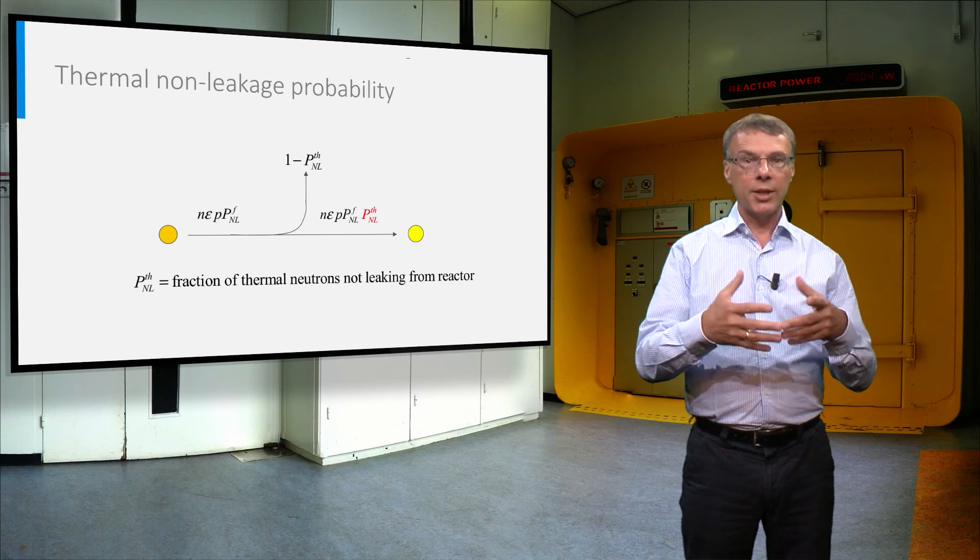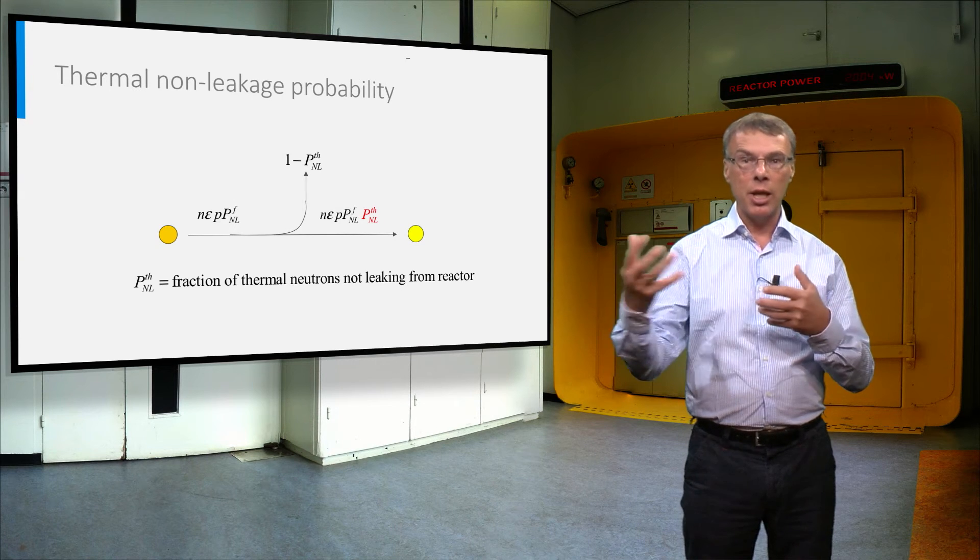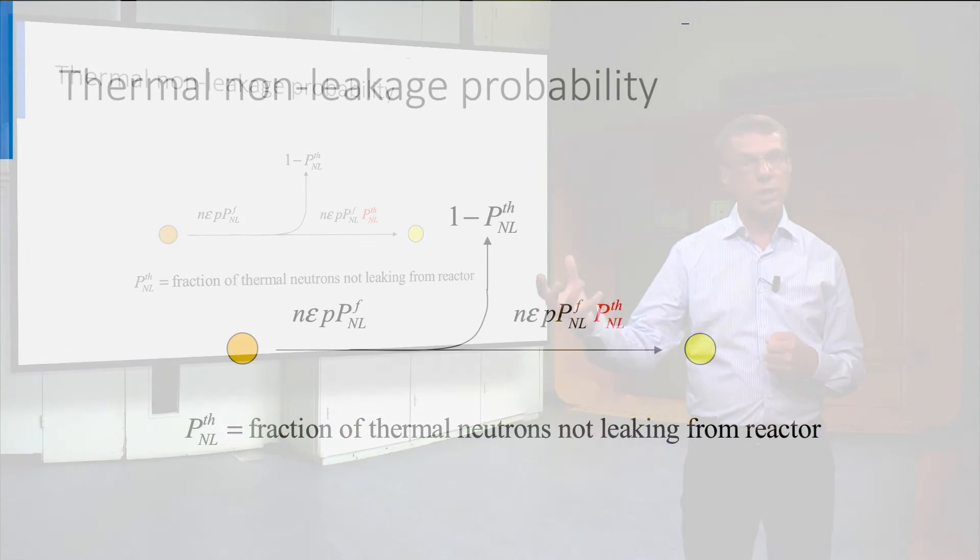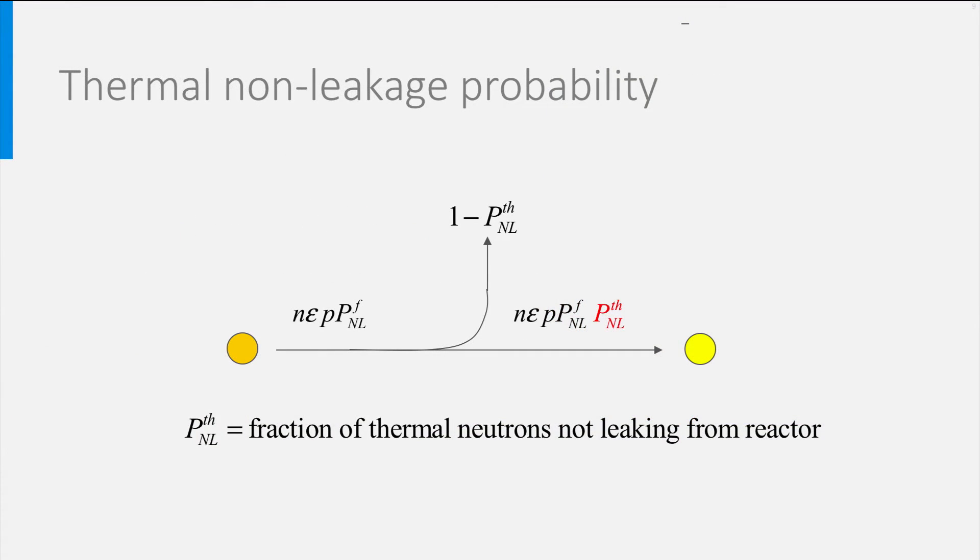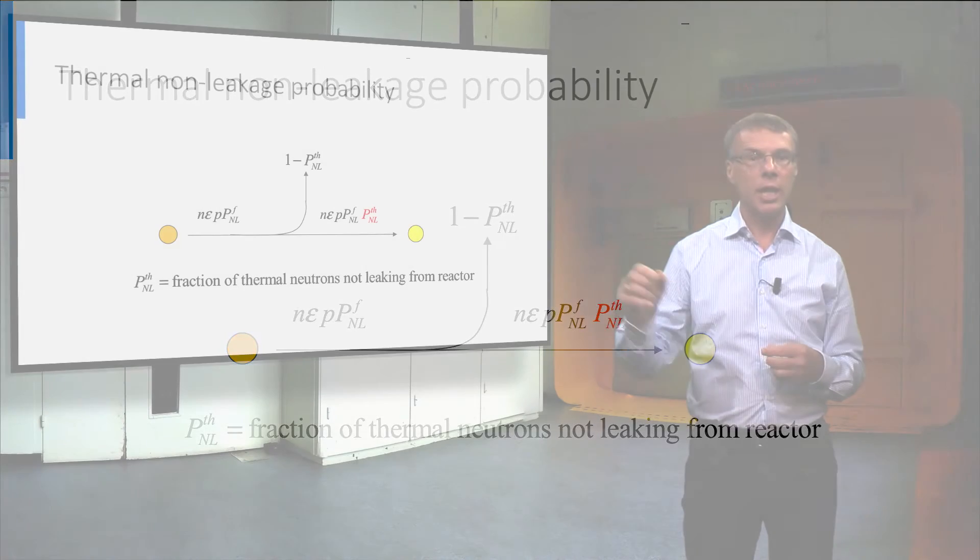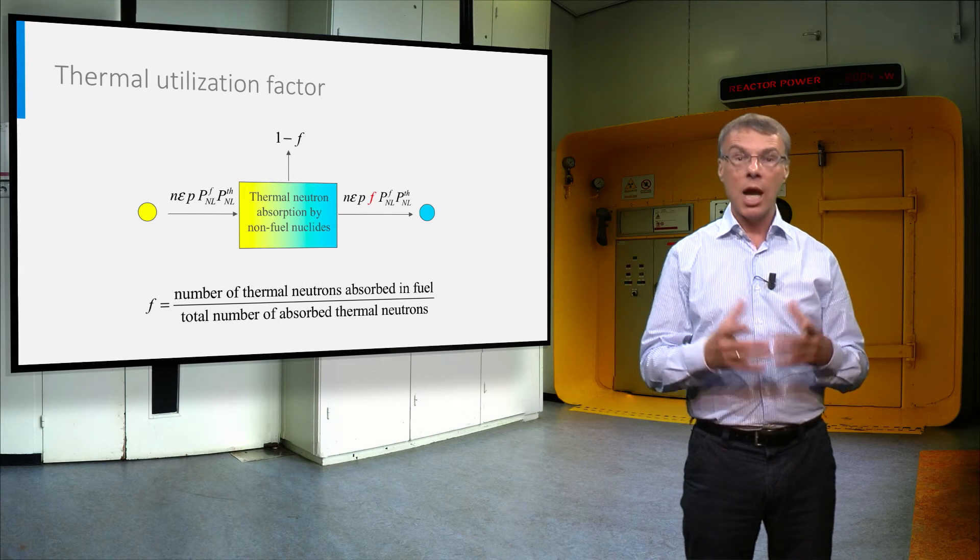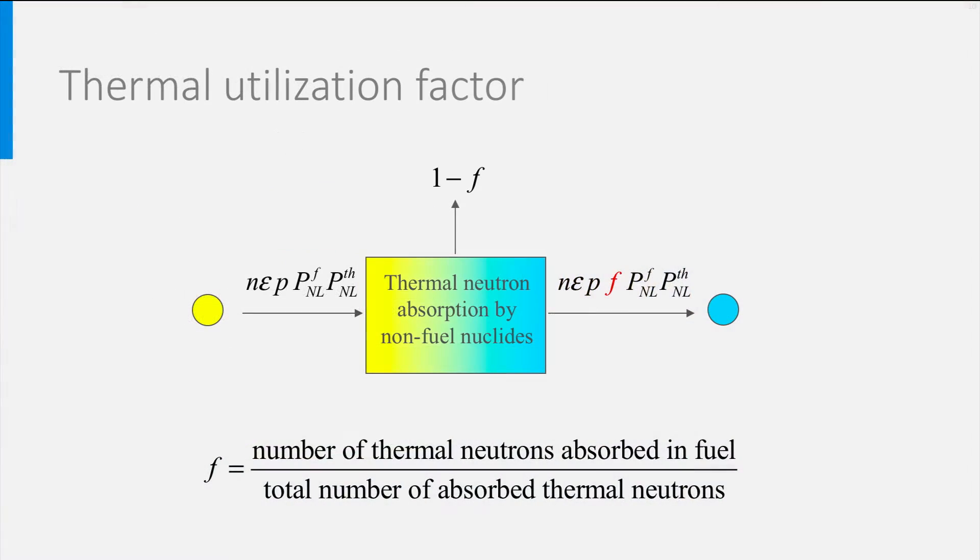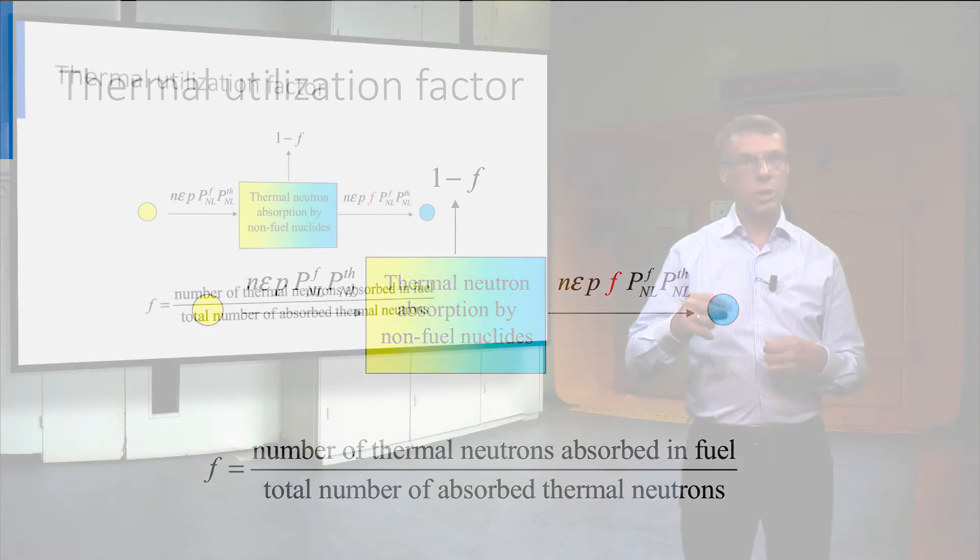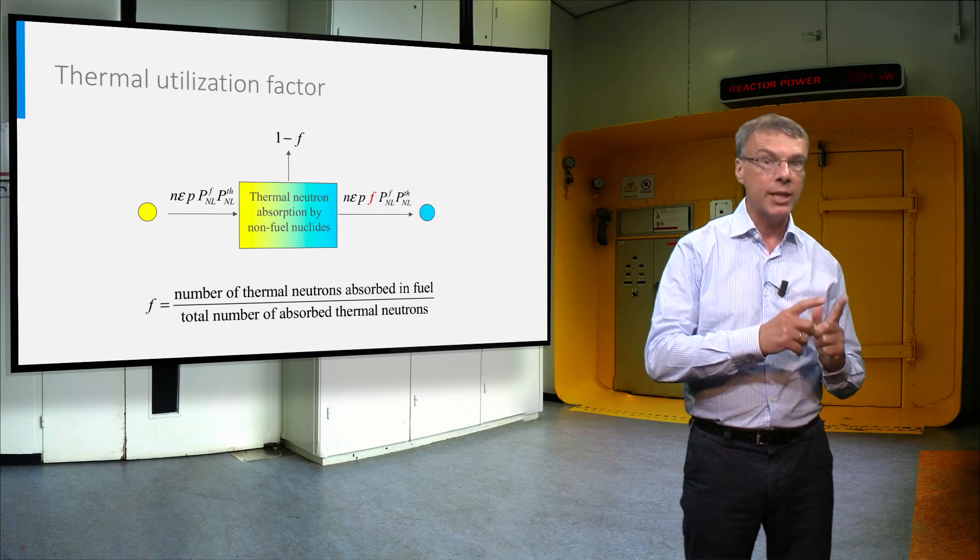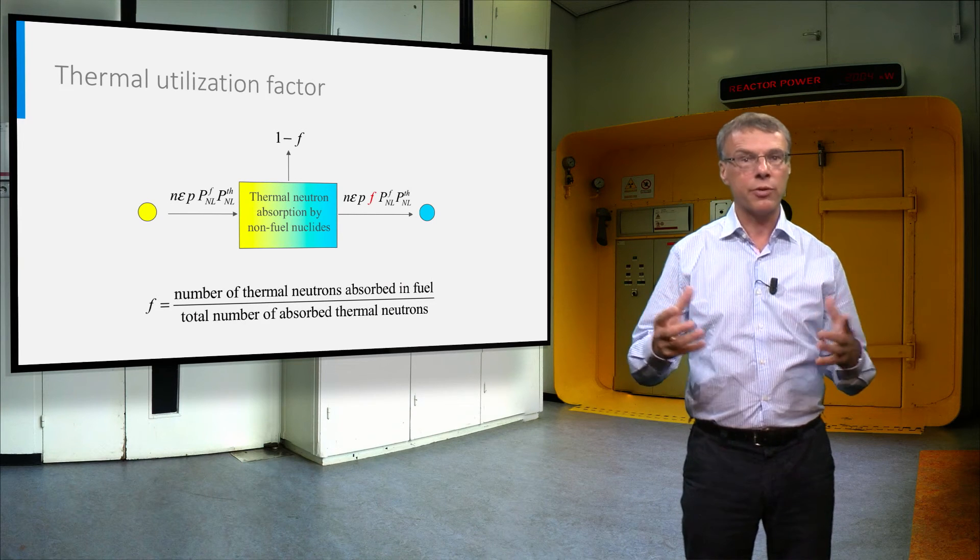The thermal neutrons can disappear from the reactor core either by leakage or by absorption. The fraction that survives leakage is called the thermal non-leakage probability, indicated with the red capital P in the formula. And the remainder of the neutrons will be absorbed. However, we can distinguish between absorption by the structural materials at one side and by the fuel nuclides at the other. The fraction of the neutrons absorbed by the fuel nuclides, this is the uranium-235 and the uranium-238, is called the thermal utilization factor.